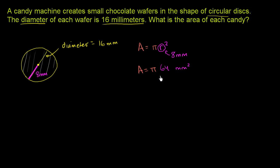And typically, this is written with pi after the 64. So you might often see it as, this is equal to 64 pi millimeters squared.